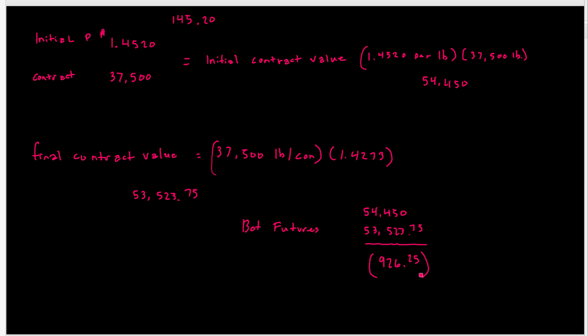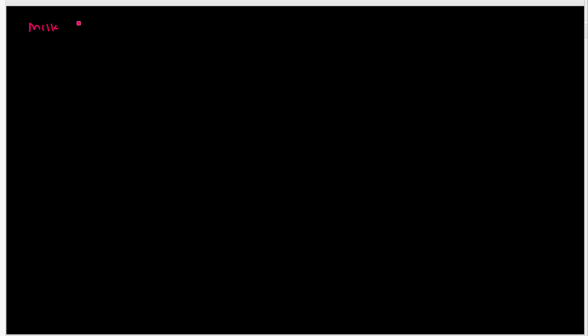Number two is pretty much identical. We're looking at milk futures, and we need a March 2017 contract. We're buying, and the price we're going to pay is the last price of the day, so again we have to use table 23-1 and find milk.